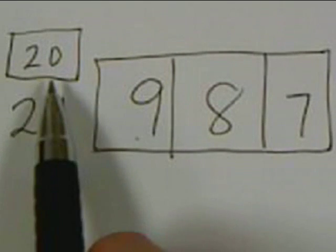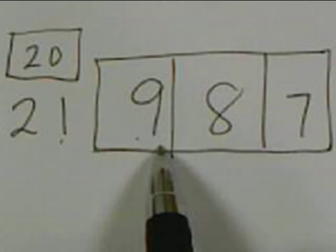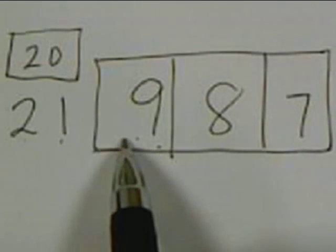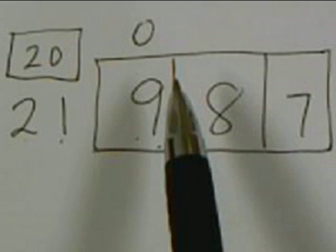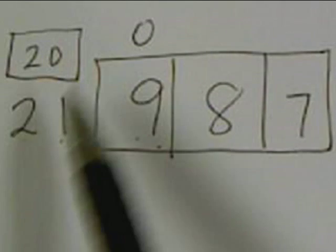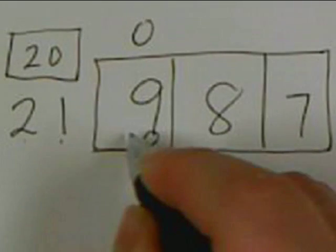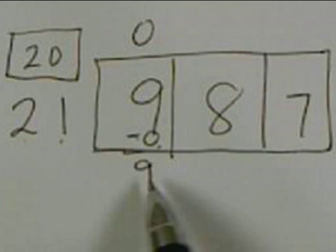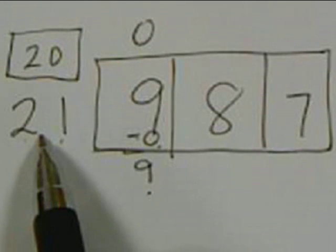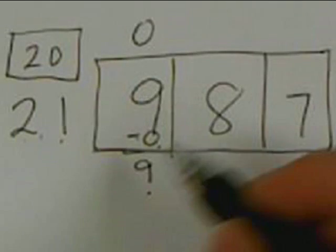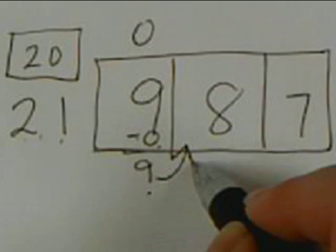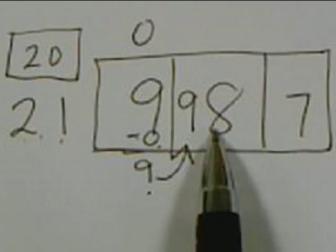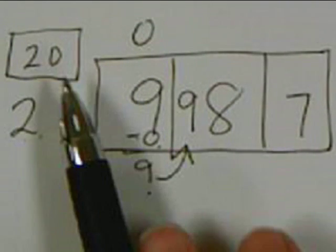9 is less than 21, so nothing times 21 will get me less than 9 except 0. So 0 goes at the top: 0 times 21 is 0, then subtract — 9 minus 0 is 9. Now 9 is less than 21, so we know we did the right thing and we can move this 9 to the next box.